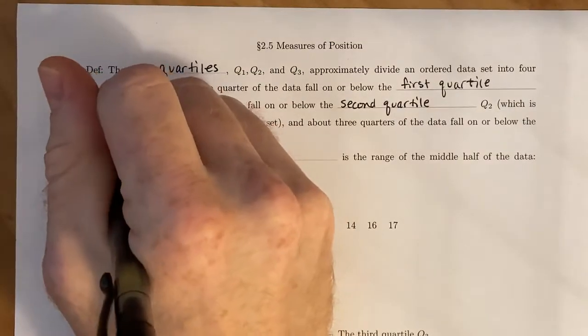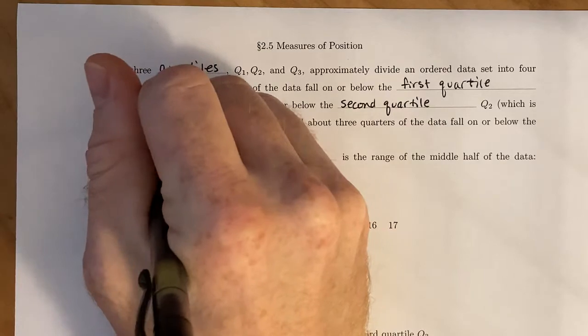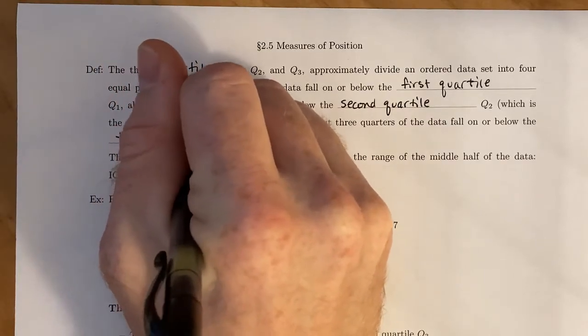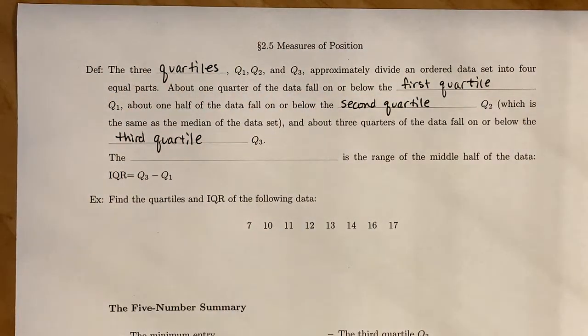About three quarters, or about 75%, of your data falls on or below the third quartile. Essentially we're going to find the median which divides our data set in half, and then in the lower half we're going to find the median of that, which is the first quartile. In the top half of our remaining data set, we're going to find the median of that, which is the third quartile.